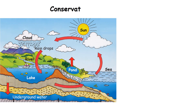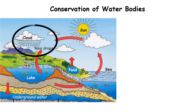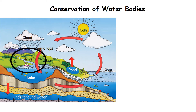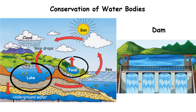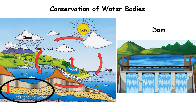Conservation of water bodies. All the water that we get comes from rain. When it rains, some water flows over the ground, giving rise to streams and rivers. The flow of the river is blocked by building a dam across it. Some water gets collected in low-lying areas such as ponds and lakes. Some rainwater seeps into the ground as underground water.